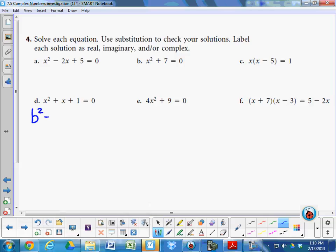For me, I like to do this part of the quadratic formula first. What's that called? The discriminant. The discriminant is 1 squared minus 4 times 1 times 1. What's 1 minus 4? Negative 3.